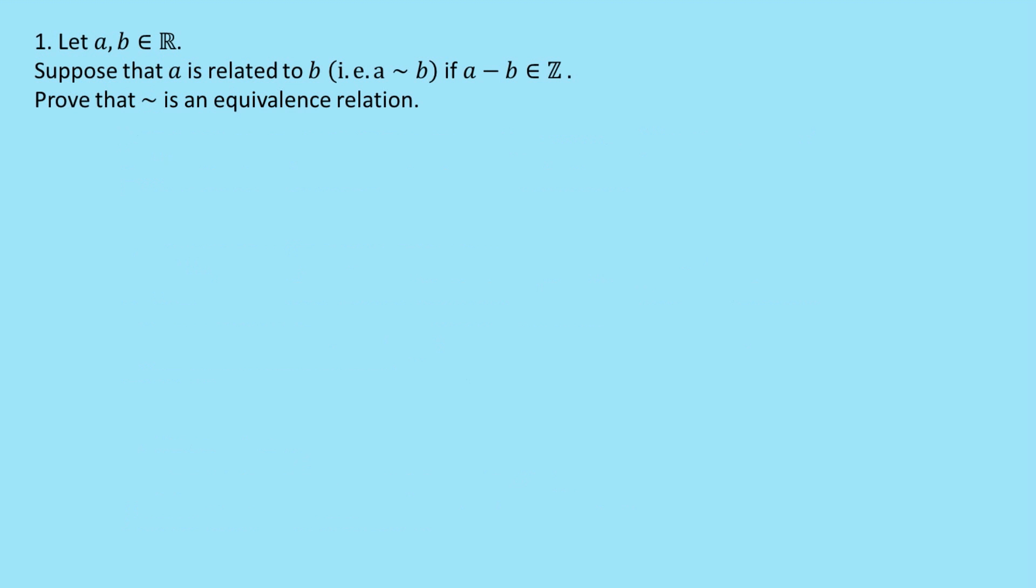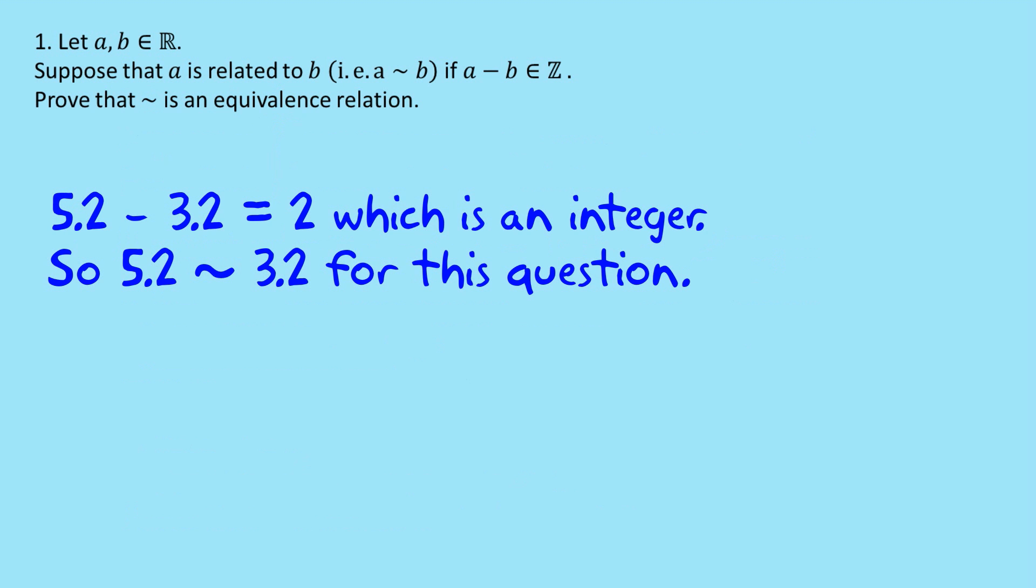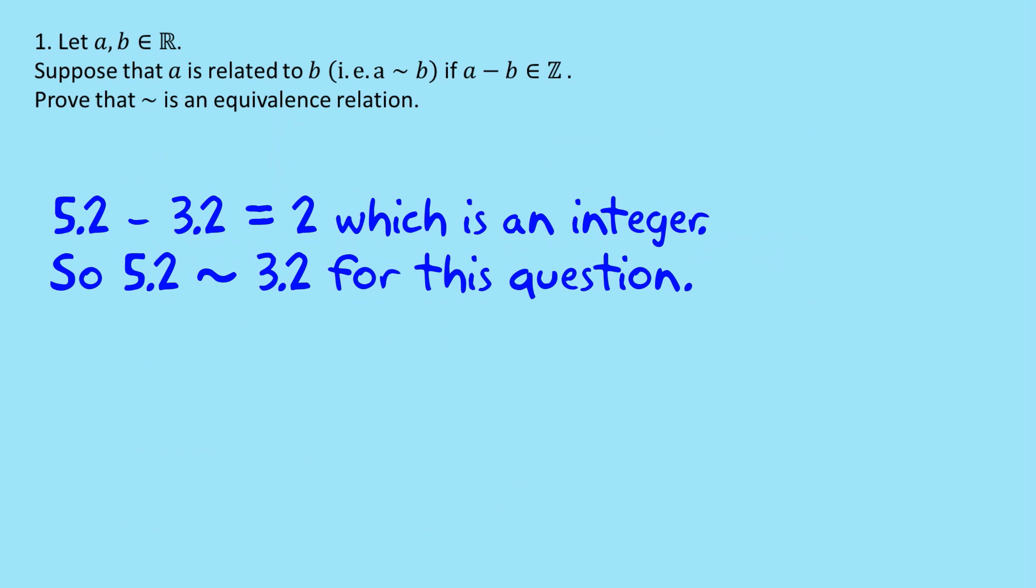So here's our first question, and we just need to start by understanding what we mean by relation. So let's use some real numbers. Let's take a equals 5.2 and b equals 3.2. And what we notice is that 5.2 minus 3.2 is equal to 2, which is an integer. So 5.2 is related to 3.2, and we give it that symbol.